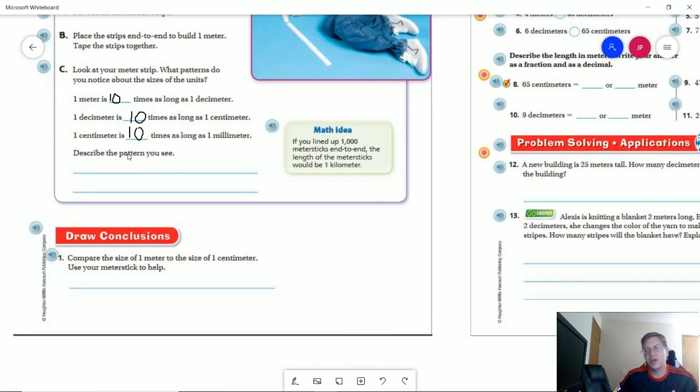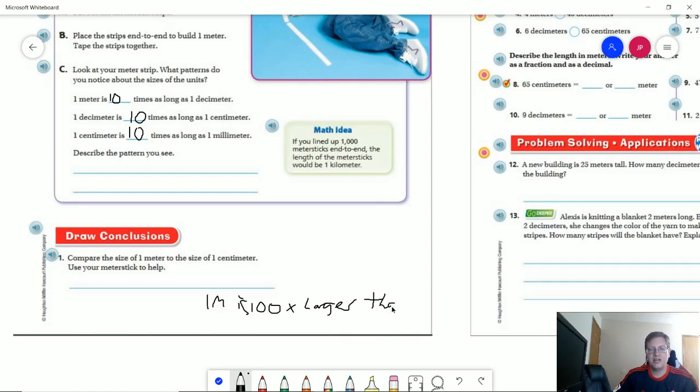The pattern that we're going to see, we're working with powers of 10. So we're going to see that anything with the metric system, we are working with powers of 10. If we wanted to compare one meter to the size of one centimeter, we would get 100 centimeters to get one meter. So that means a meter is going to be 100 times larger.